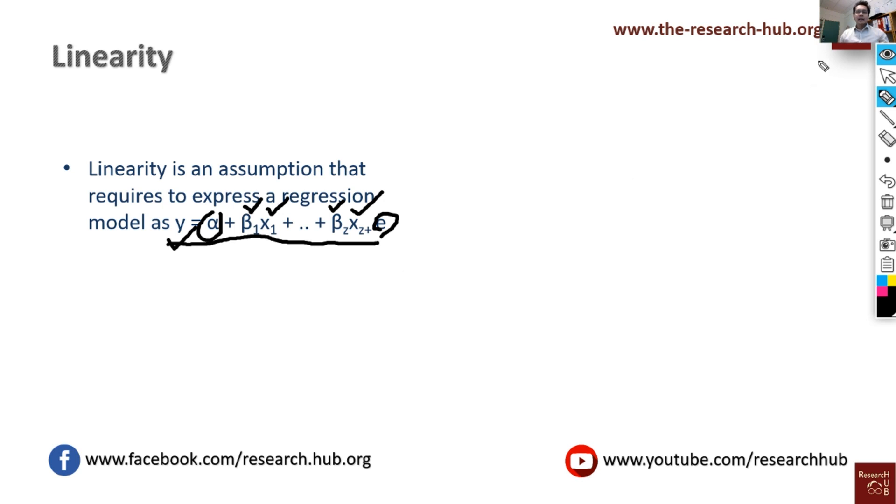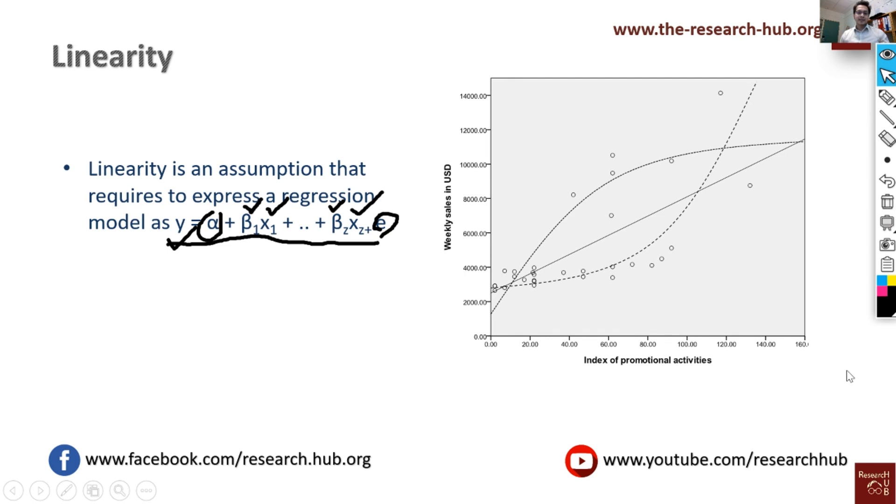And how does it look like? It looks like this. Let's say here we have some data: weekly sales in USD, which is our dependent variable, and then we have index of promotional activities, which is our independent variable. These dots are the observed data which we plot here.